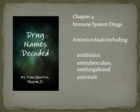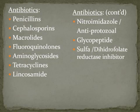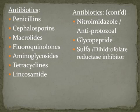Before I even start pronouncing the drugs, let me pronounce the drug classes for the antibiotics, and there are quite a few of them. The first are the penicillins, then the cephalosporins, the macrolides, the fluoroquinolones, the aminoglycosides, the tetracyclines, there's one linkosamide, nitroimidazole, and antiprotozole — it's the same drug, it has two different properties. The glycopeptide and the sulfa drug combination, which is a dihydrofolate reductase inhibitor.